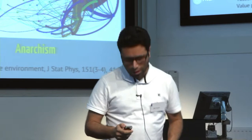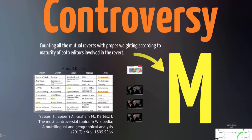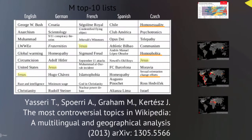We wanted to quantify this. It took us almost a year, but we came up with a measure of controversy, M, which measures how much editorial war has been happening on a single article. Using this, you can order articles by their controversy measure in different language editions. These are the top 10 most controversial articles in different language editions. In English, George W. Bush has been the most controversial article ever, followed by anarchism, Muhammad, global warming, circumcision, United States, Jesus, race and intelligence, and so on.